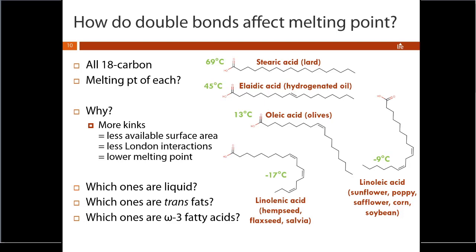Which of these fatty acids are liquid at room temperature? Room temperature in Celsius is somewhere in the 22 to 25 degree range. All three fatty acids with cis double bonds have a melting point lower than room temperature, so they're all going to be liquid. Our other two — the saturated and the trans — have melting points above room temperature, so they're going to be solid at room temperature.